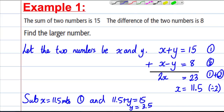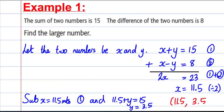Our answer is x equals 11.5 and y equals 3.5. If we add them up, those two numbers, you do get 15. If you take those numbers away from each other, you do indeed get 8, so we're correct.